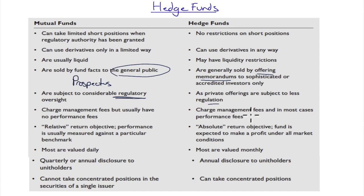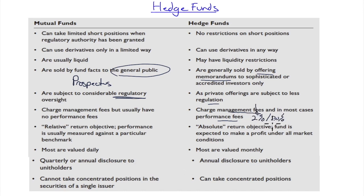Hedge funds charge management fees and in most cases performance fees. A fund called 'two and twenty' means a two percent management fee no matter what the fund does, and twenty percent of the upside. So if the fund returns ten percent, the hedge fund managers get the two percent management fee plus twenty percent of that ten percent — the performance fee.